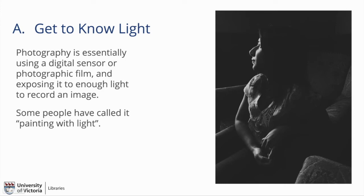By dragging the exposure slider down, everything dropped until her face was properly exposed, which dropped all the shadows down into darkness. Then the photo was processed in black and white, and what we have here is what photographers call a low key portrait — it ends up being very emotive and lovely. That's how you get a portrait like this.